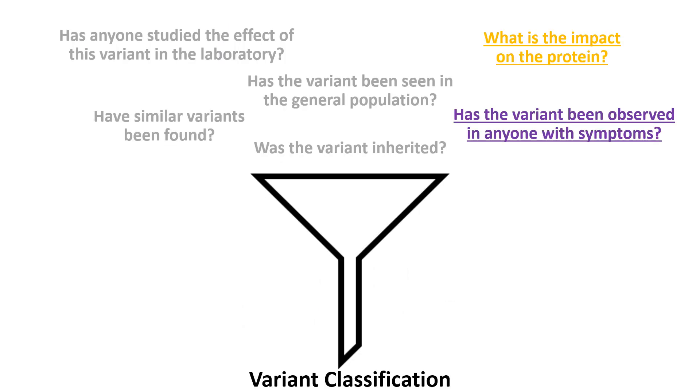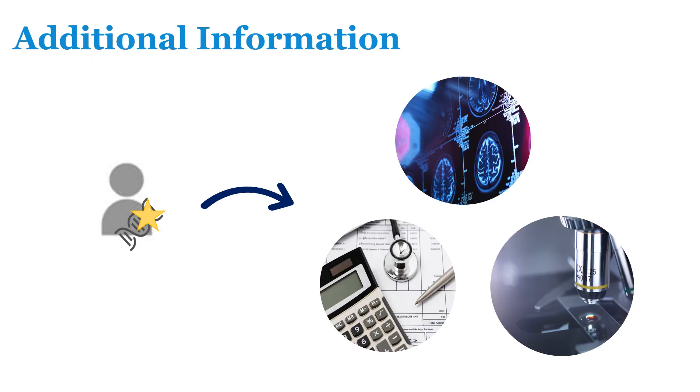Fourth, for some variants, additional information about a patient's symptoms or features may help us better understand that variant. For example, some genetic variants result in changes that could be measured in a patient's blood, tissue, or elsewhere in the body. Some genetic changes may also cause very specific symptoms. By looking for these specific changes and symptoms, we can sometimes better understand a VUS and whether or not it is impacting a person's health.